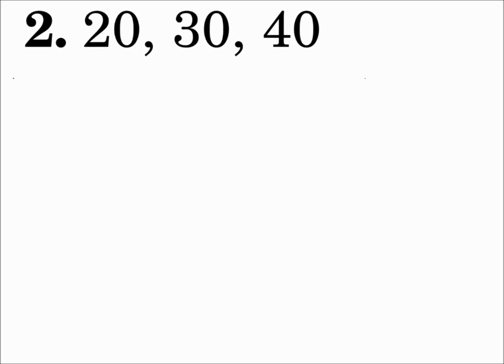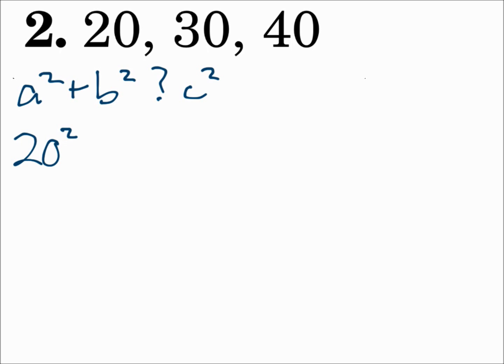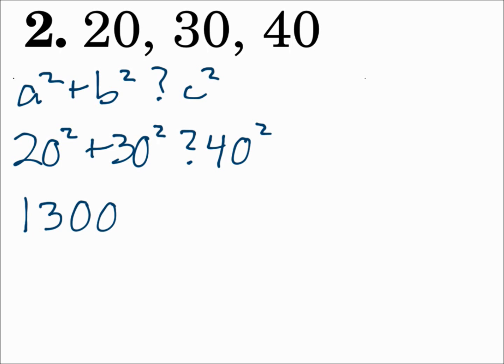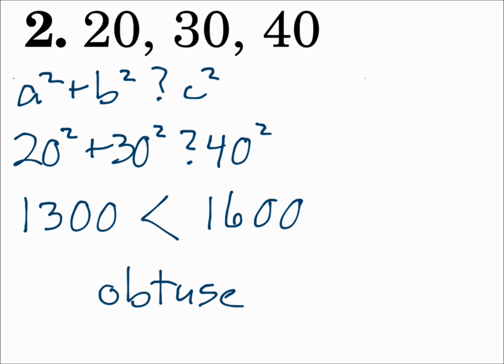Number 2: 20, 30, and 40. Is it a triangle? Is 20 plus 30 greater than 40? Yes, it is, so it is a triangle. Now test what type of triangle it is: a squared plus b squared compared to c squared. c is the biggest side, so 20 squared plus 30 squared — how does that compare to 40 squared? We have 1,300 on the left and 1,600 on the right. So 1,300 is less than 1,600, and that makes it an obtuse triangle. When a squared plus b squared is less than c squared, it's obtuse.